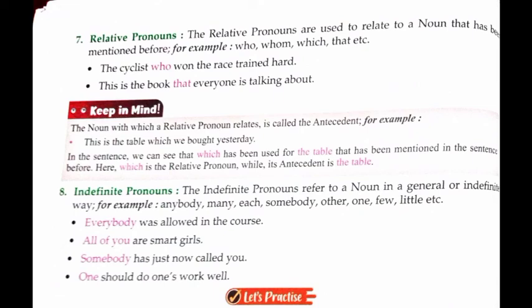For example: 'Everybody was allowed in the course' — यहाँ कोई specific person नहीं, सब लोग। 'Somebody has just now called you' — किसी ने अभी आपको call किया, कोई definite person नहीं जैसे Mohit या Rahul। इसलिए 'somebody' indefinite pronoun है।